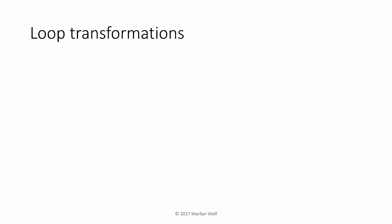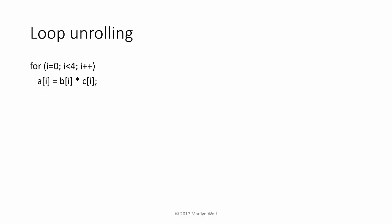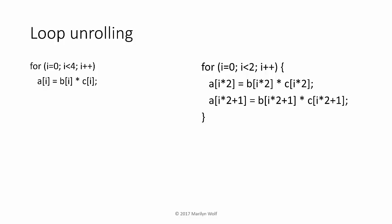Loops are of course a natural target for optimizations. We're interested in reducing loop overhead, increasing opportunities for pipelining, and improving memory system performance. Loop unrolling is a simple transformation useful in itself and for enabling other optimizations. Here's a loop that executes its body a fixed number of times. We can replace it with a loop executed half as many times, with two copies of the body inside. We adjust the bodies to use the proper induction variable in each case. Now rather than executing four copies of the loop test, we're only executing it twice. We can fully unroll a loop by making one copy of the body for every iteration.